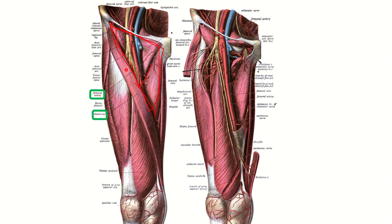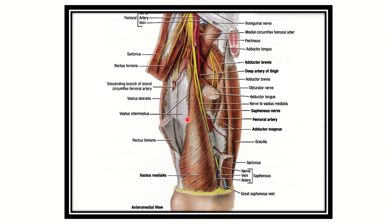Here we can see the muscle that covers the femoral artery distally, beyond the femoral triangle — this muscle needs to be removed. We can see this muscle is the sartorius muscle. In this picture, we can also see the femoral artery distally and here is the cut edge of the sartorius muscle.